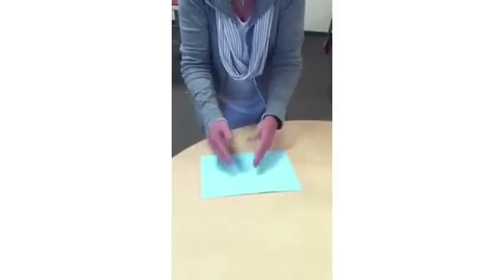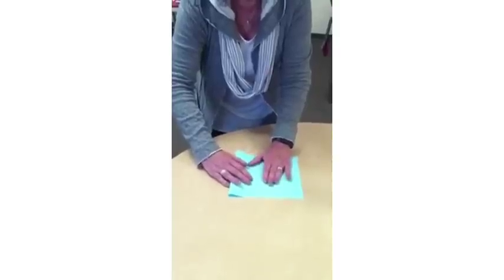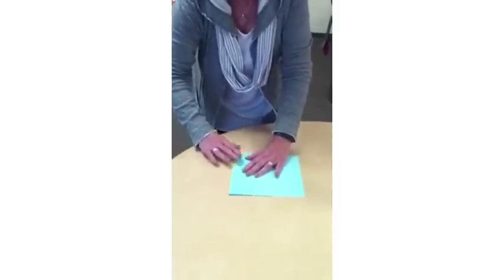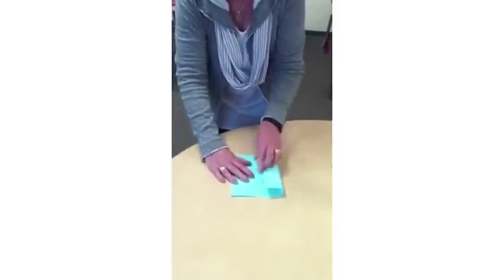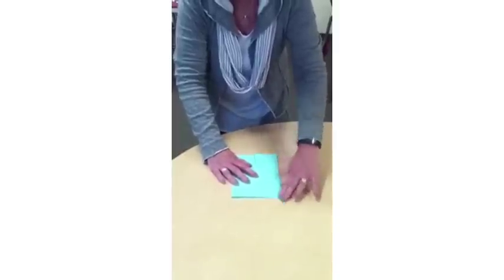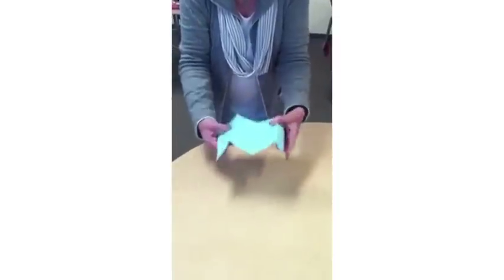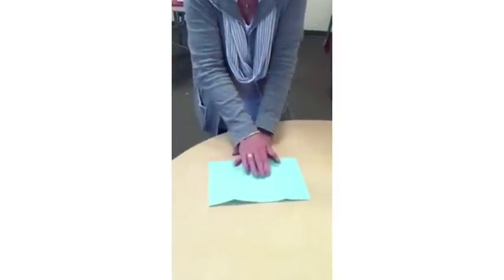And you're going to fold the left and the right side in towards the middle again. One side. And now the other side. Don't overlap. Unfold and refold. So that you have two good sharp creases there. Open your paper and we've got our four sections again.